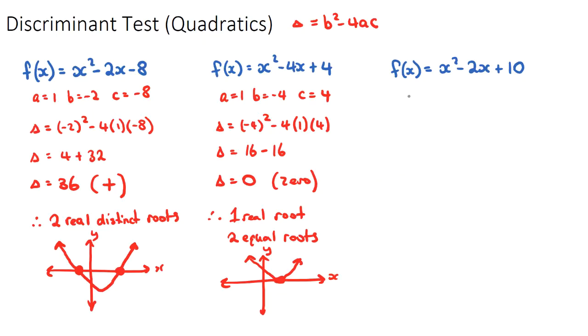The last one, if we do the discriminant, so a is one, b is negative two, and c is 10. Our discriminant will be b² minus 4 times a times c. So our discriminant will be 4 minus 40. So our discriminant will be negative 36. Now the number 36 isn't super important. The fact that it's a negative is, so we can say this is a negative number.